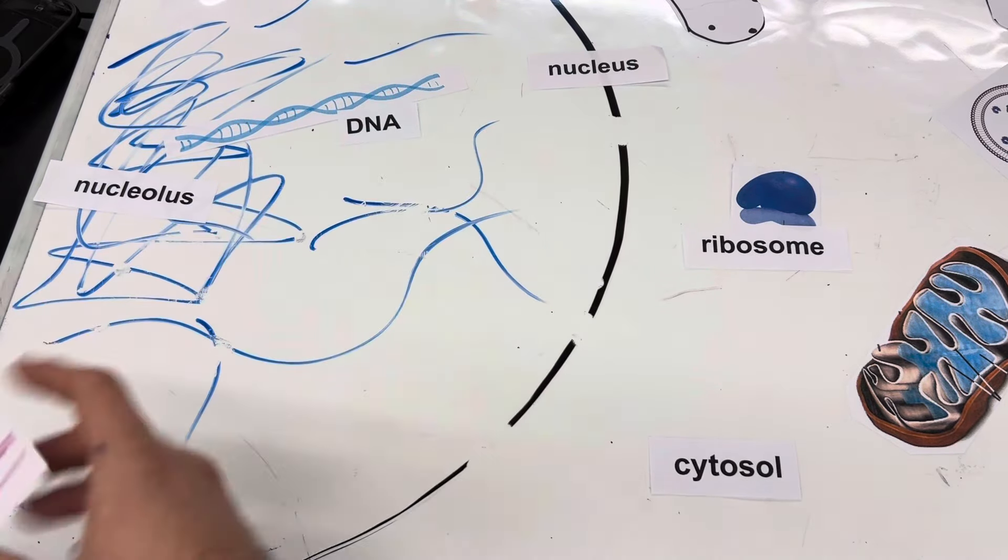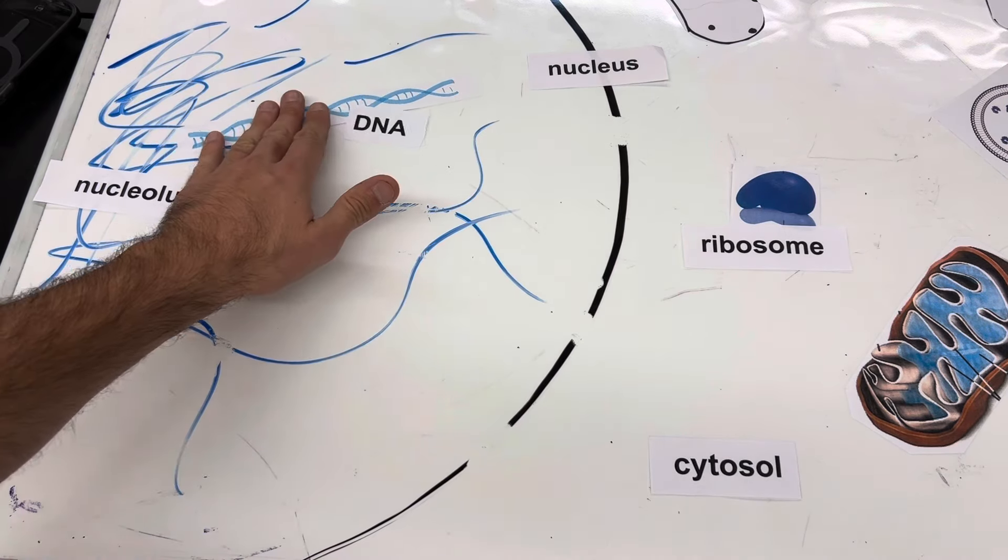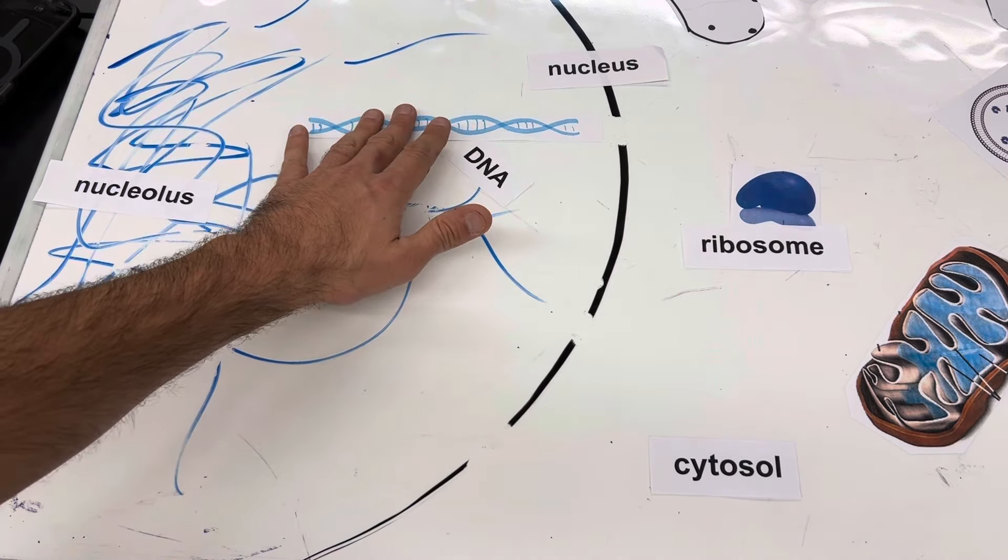So now we have a ribosome that's our protein factory, that's going to make our hexokinase, but we need some instructions to make that happen. So in our nucleus, again, maybe a little bit more outside the nucleolus over here.